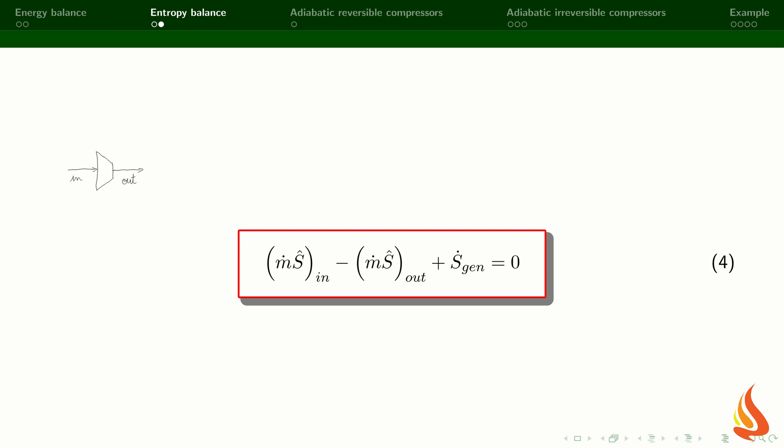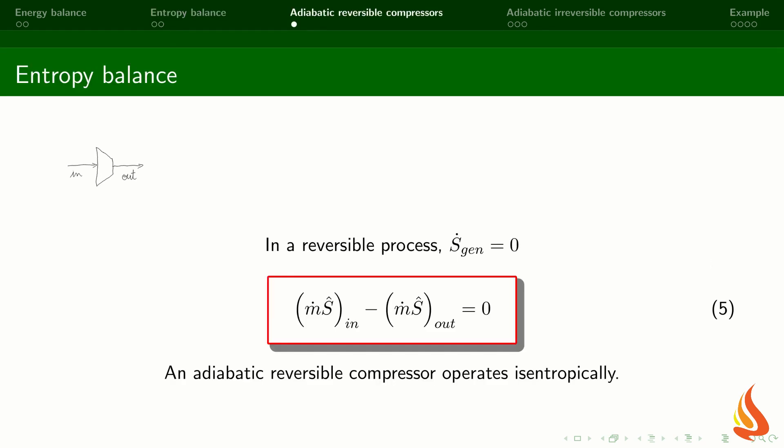Before we move on to adiabatic irreversible compressors, let's take a look at the case of adiabatic reversible compressors. In the reversible case, the rate of entropy generation is equal to zero. The consequence is that the entropies of the input and output streams are equal; therefore, the compression process is isentropic.